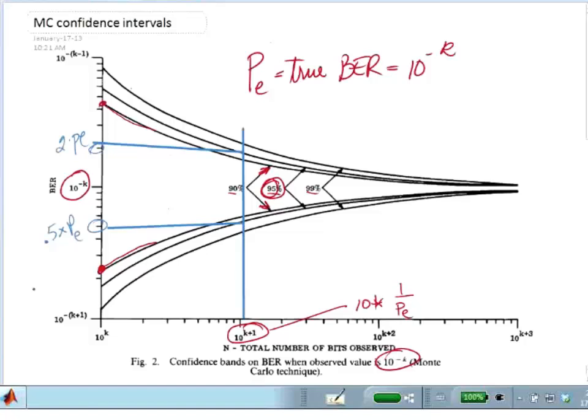So that means that for ninety-five percent confidence that my estimate will be within a factor of two of the true value, I have to run about ten times more trials than the inverse of the true probability.